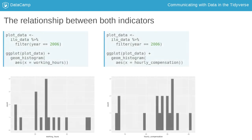Let's look at both labor market indicators. With ggplot2, we can quickly create a histogram of both the weekly working hours variable and the hourly compensation variable. This shows us the distribution of these values in 2006.